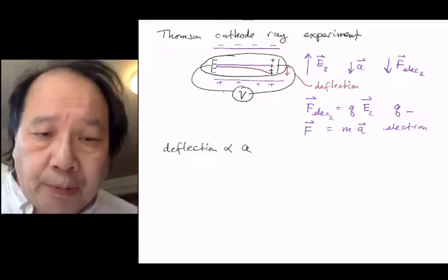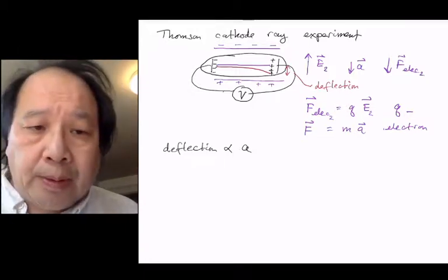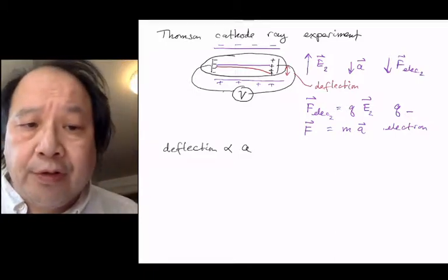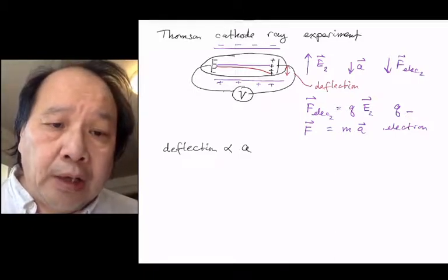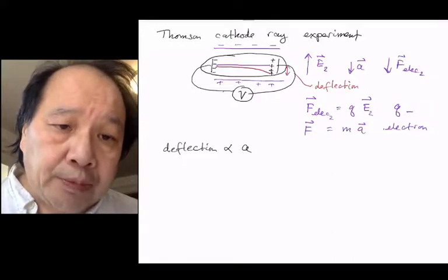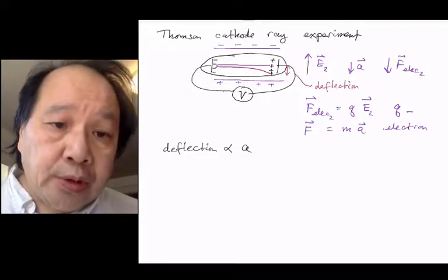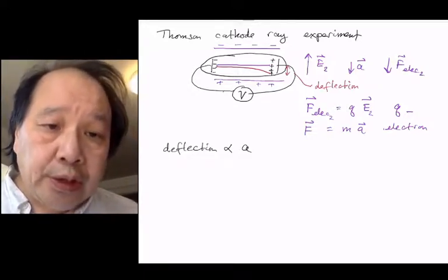So that means they're proportional, and he was able to do this experiment lots of different ways. He was able to make deflections with electric fields, magnetic fields, and so forth, and with physics that I won't describe in this course, he was able to figure out the proportionality constant. So knowing the deflection, which can just be measured with a ruler, he was able to measure the acceleration.